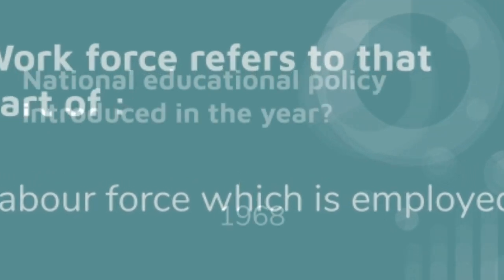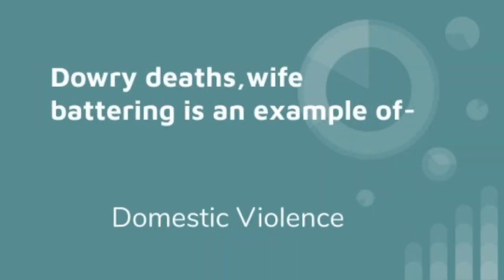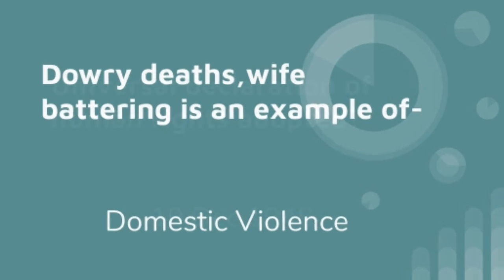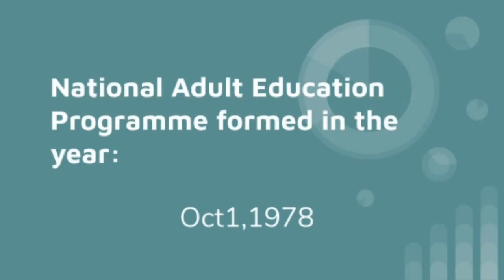The National Educational Policy was introduced in the year 1968. Dowry deaths and wife battering are examples of domestic violence. The Universal Declaration of Human Rights was adopted on 10th December 1948. The National Adult Education Program was formulated in October 1st, 1978.